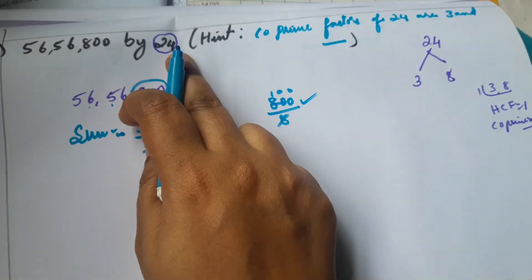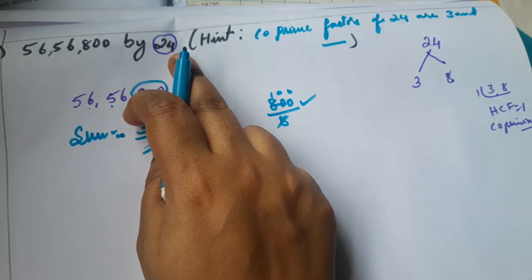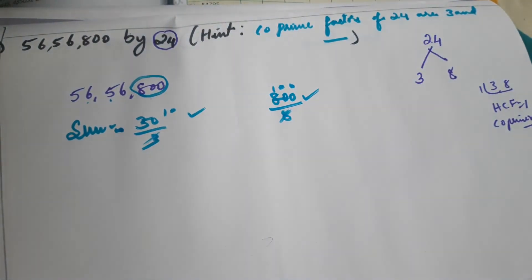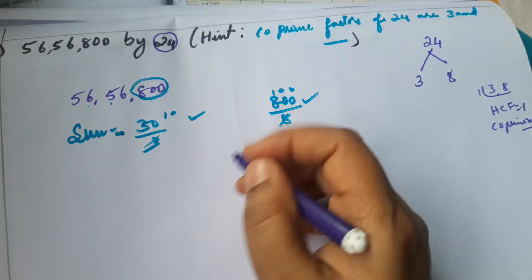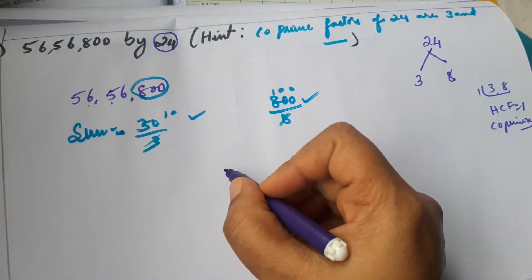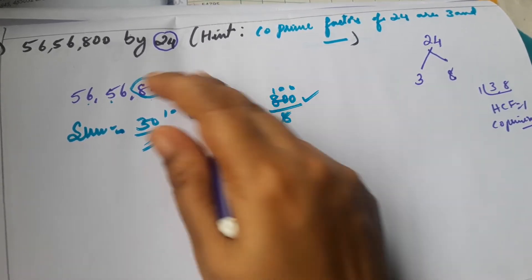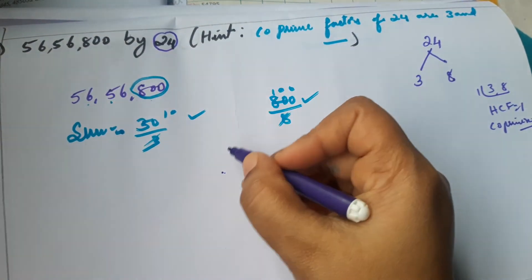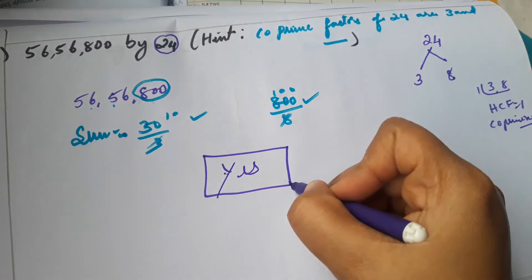Last 3 digits are 800. 800 divided by 8 — 8 ones are 800, so it is perfectly divisible by 8. Both conditions are satisfied, so 56,56,800 is perfectly divisible by 24 without any remainder. Answer: Yes.